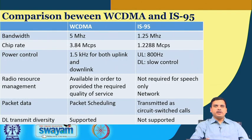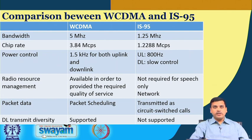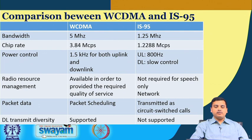Comparing WCDMA and IS-95, which is also a CDMA technique from an earlier generation, the bandwidth increased from 1.25 megahertz to 5 megahertz, the chip rate also increased accordingly, and power control changed between both systems. In IS-95, which was used only for speech networks, radio resource management was not much of a necessity, whereas WCDMA was also going to support data, making radio resource management important to introduce.